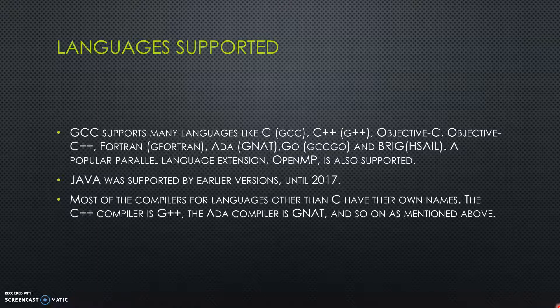With GCC, there are multiple compilers to support different languages. For example, the C++ compiler inside GCC is called G++, and so on. Usually when talking about compiling one of these languages, we can use a distinct compiler name or just simply refer to all of them as GCC.